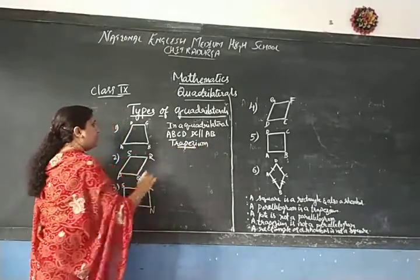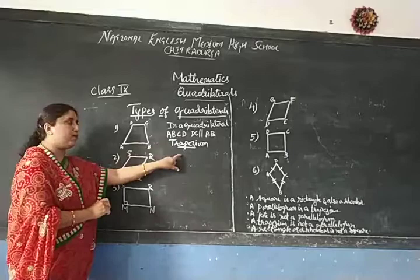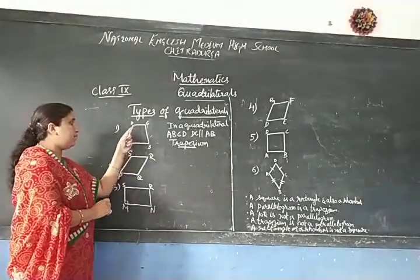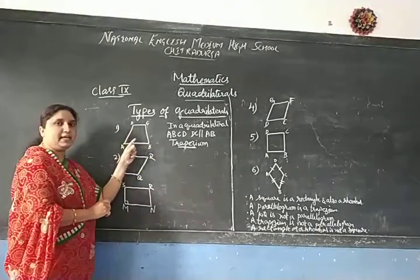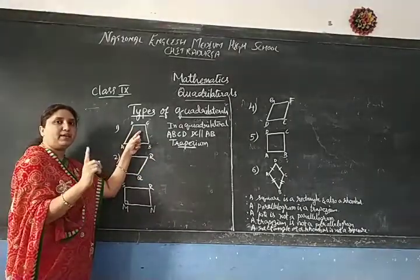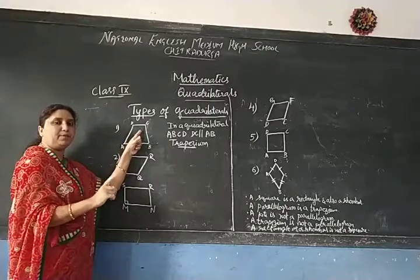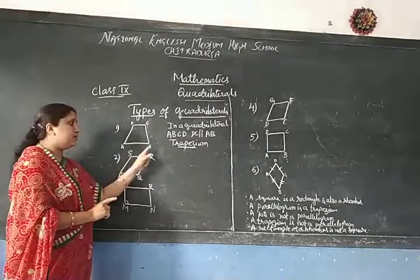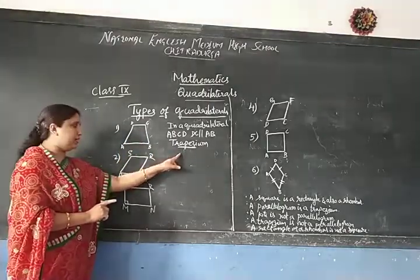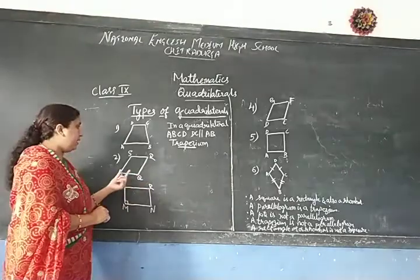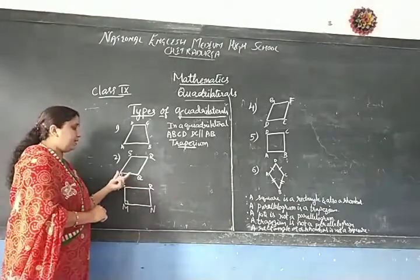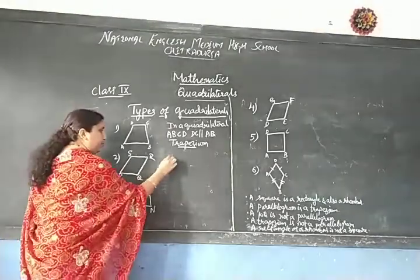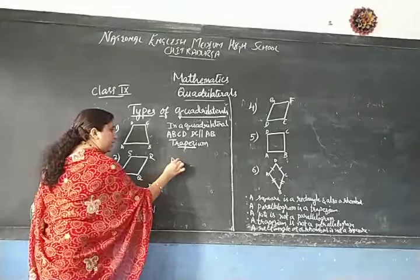In this trapezium, a trapezium is a quadrilateral where only one pair of opposite sides are parallel. So it is called as the trapezium.